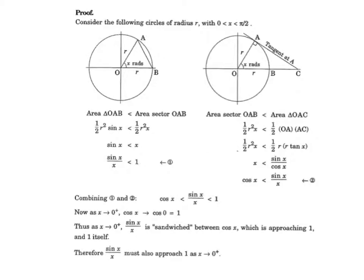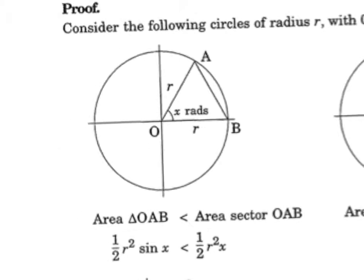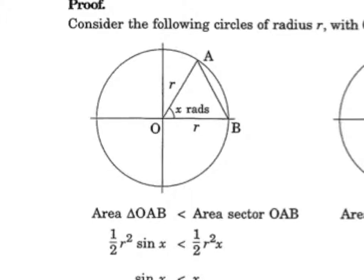Now let's get to what this video is really about: the trig limits we need to know for the course. Here's the proof of the first limit - sine x over x as x tends to 0 - which comes from a geometric construction. We have a circle of radius r with an angle of x radians, and we compare areas using the squeeze theorem. The area of triangle OAB is half r squared sine x, and the area of sector OAB is half r squared x. Since the triangle area is always less than the sector area, we get half r squared sine x is less than half r squared x.